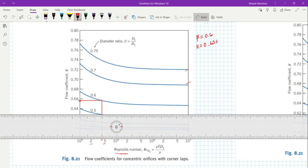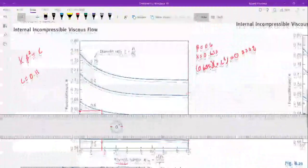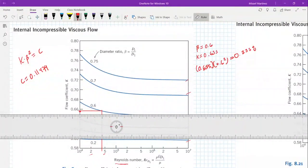A formula that we need to keep in mind is k times beta squared is equal to the C coefficient that you already calculated. Once you multiply these two numbers, if they're equal to our C value, then we're good. If they do not, then we need to do the calculation again. 0.655 times 0.6 squared gives us 0.2358. Remember, the C value that we calculated above was 0.11479. We are still way above.